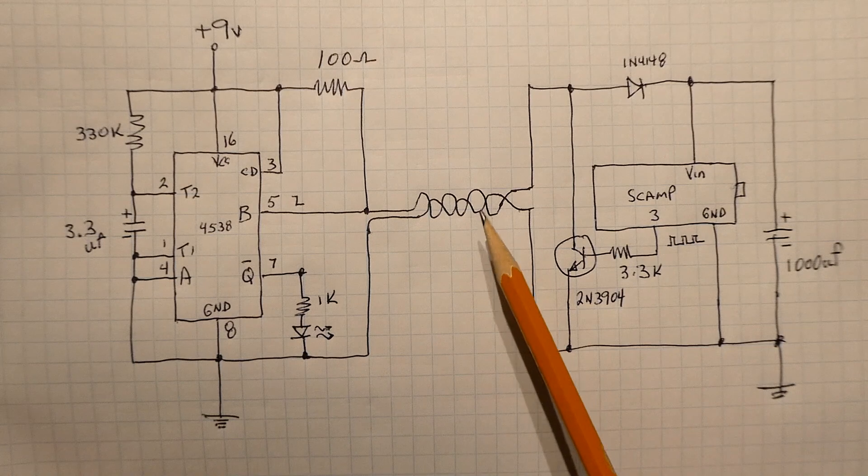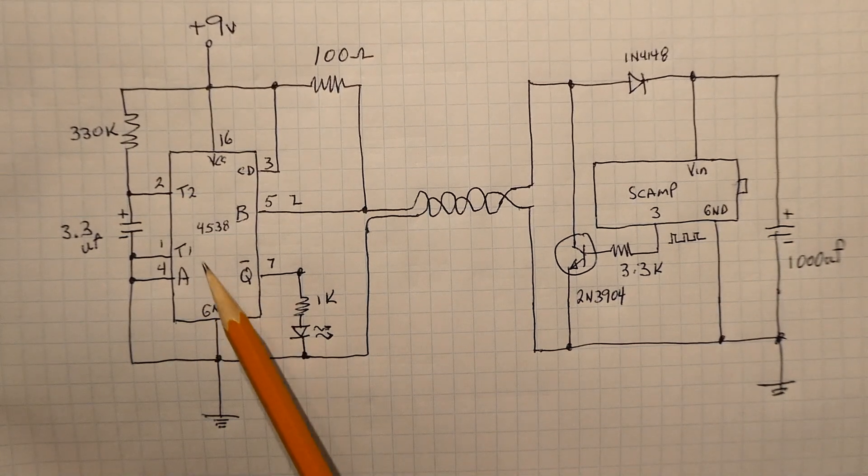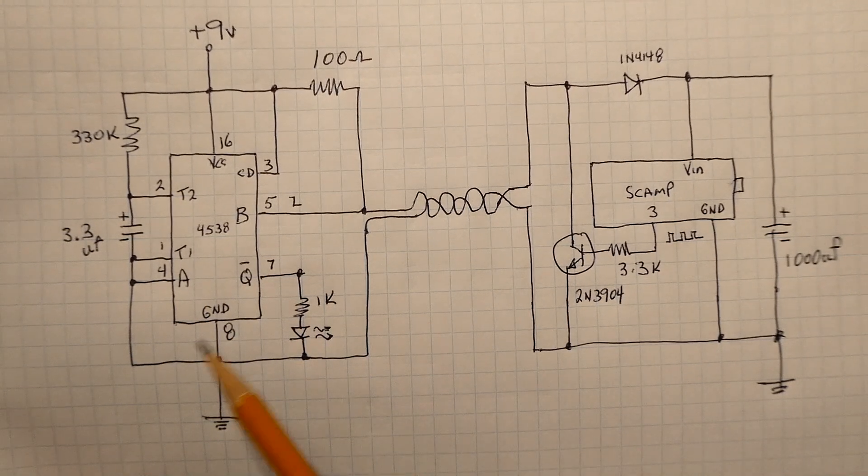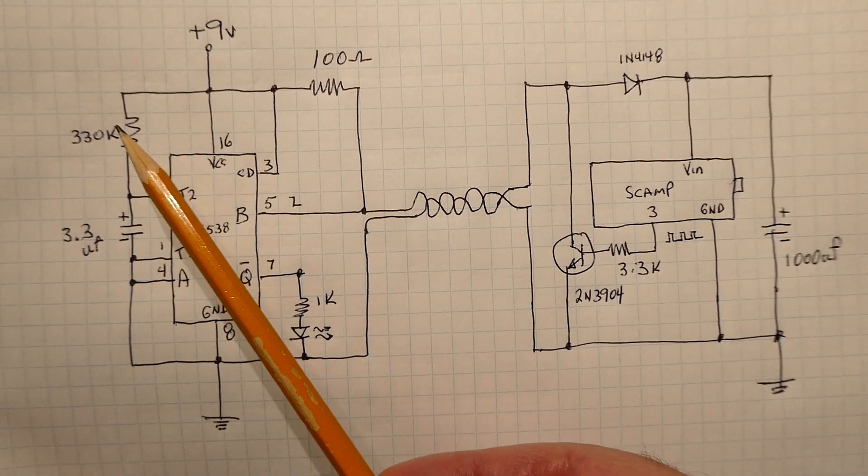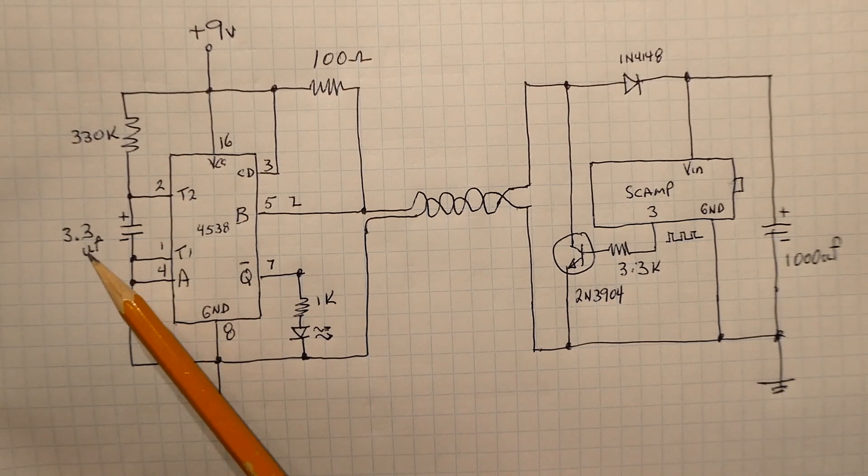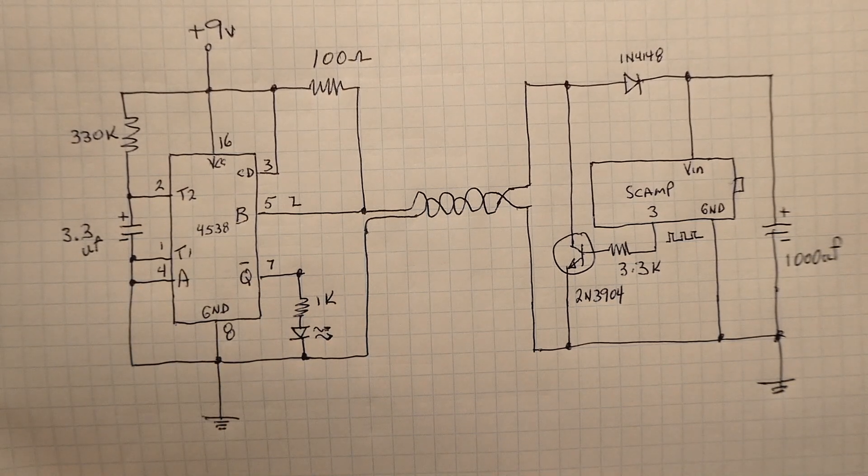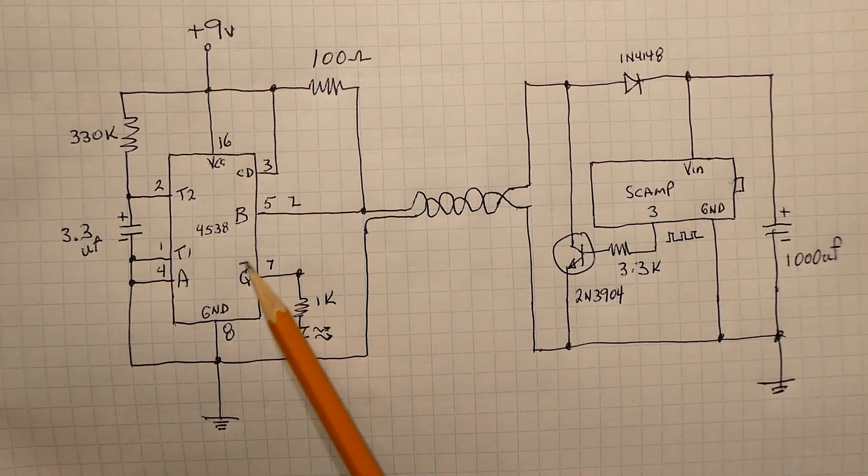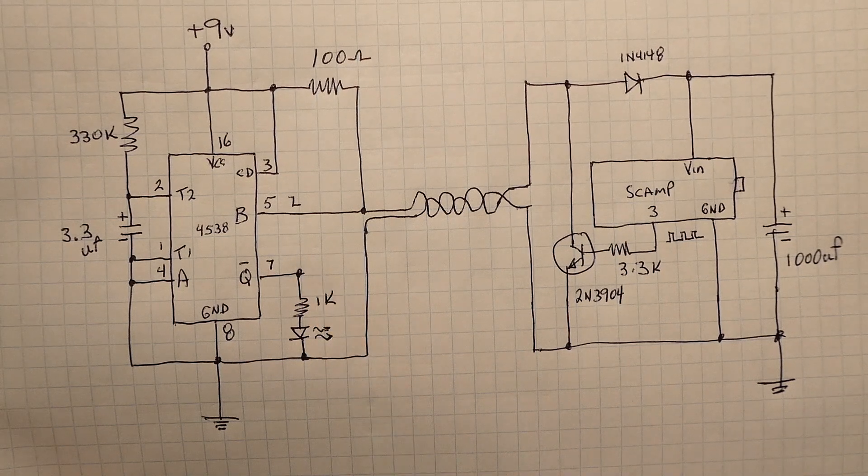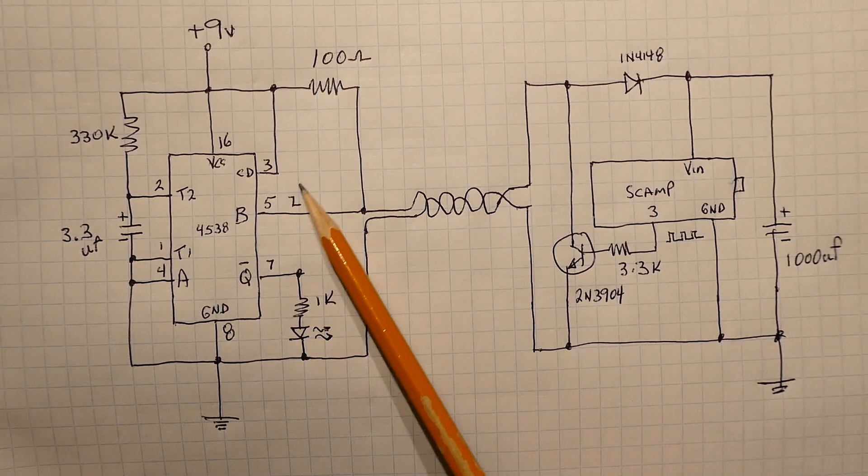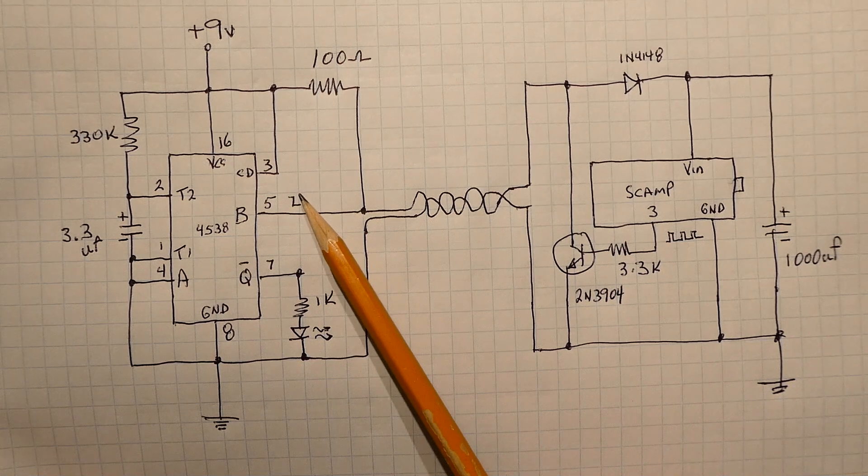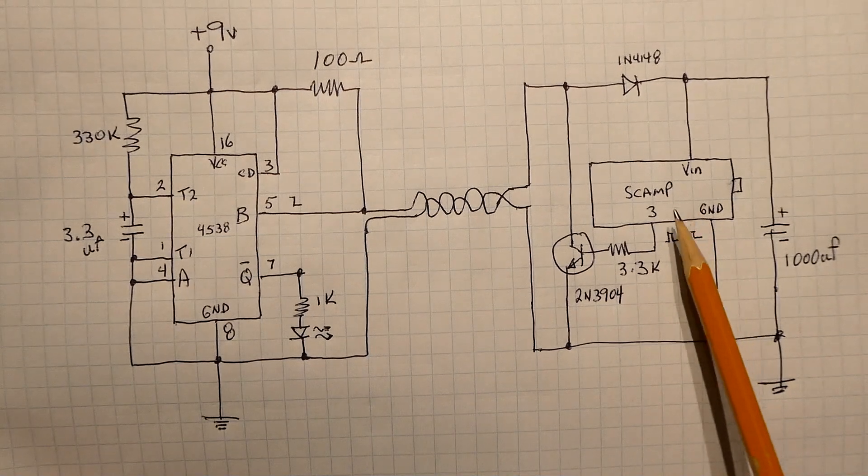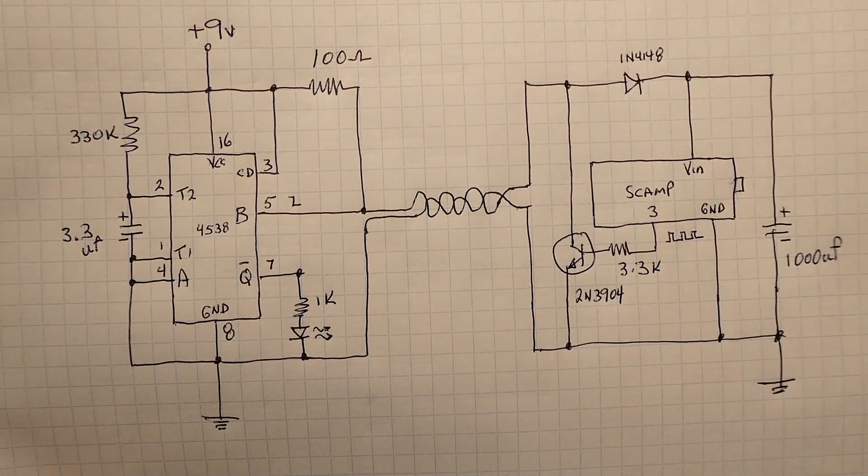Now the circuit on the left is a monostable, a 4538 monostable. It's retriggerable and the RC time constant of a 330k ohm resistor and 3.3 microfarad capacitor will give an on time of one second. So every time we get a high to low transition into pin 5, the Q-not will go low for one second then come up high. Now if we have constant pulses into pin 5 faster than one second, the Q-not will always be low and we're getting those pulses from the circuit, from the microcontroller.